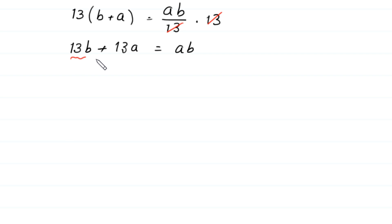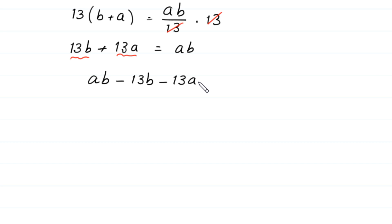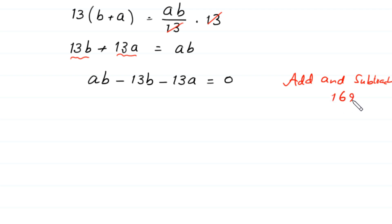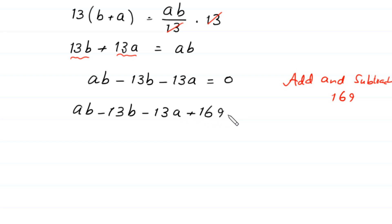Now we move 13B and 13A to the right side. Like this: AB minus 13B minus 13A is equal to 0. From here we add and subtract 169, giving AB minus 13B minus 13A plus 169 minus 169 equal to 0.